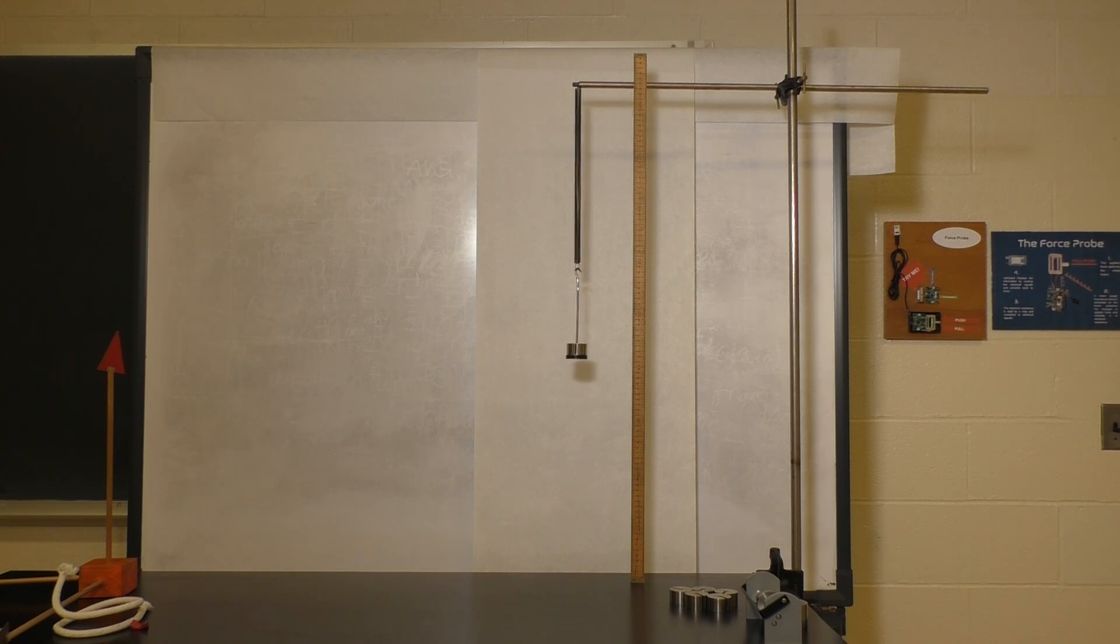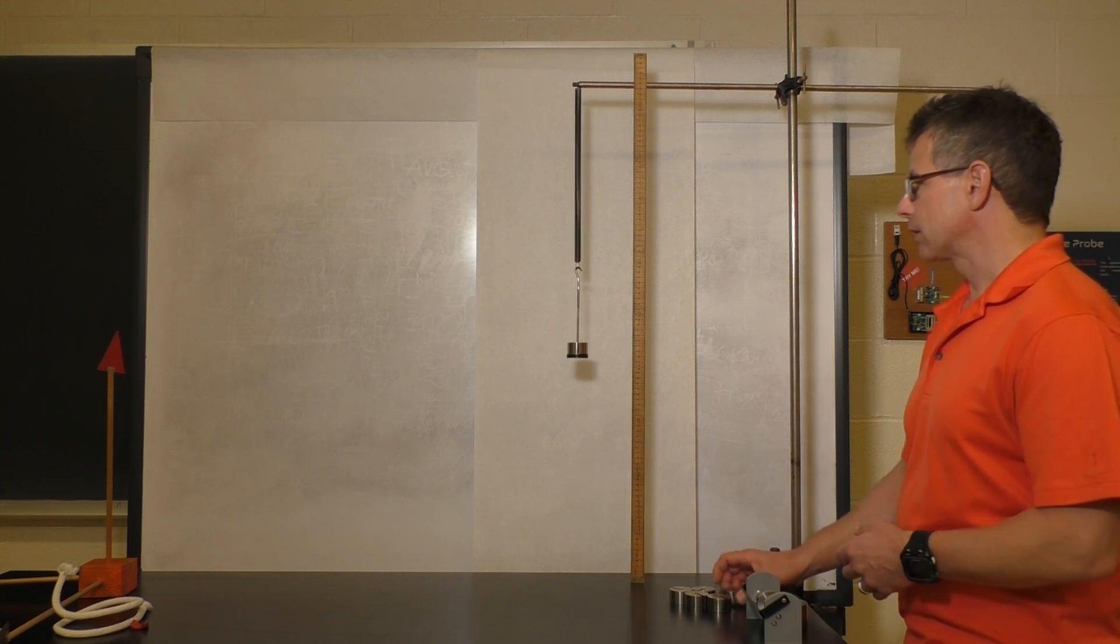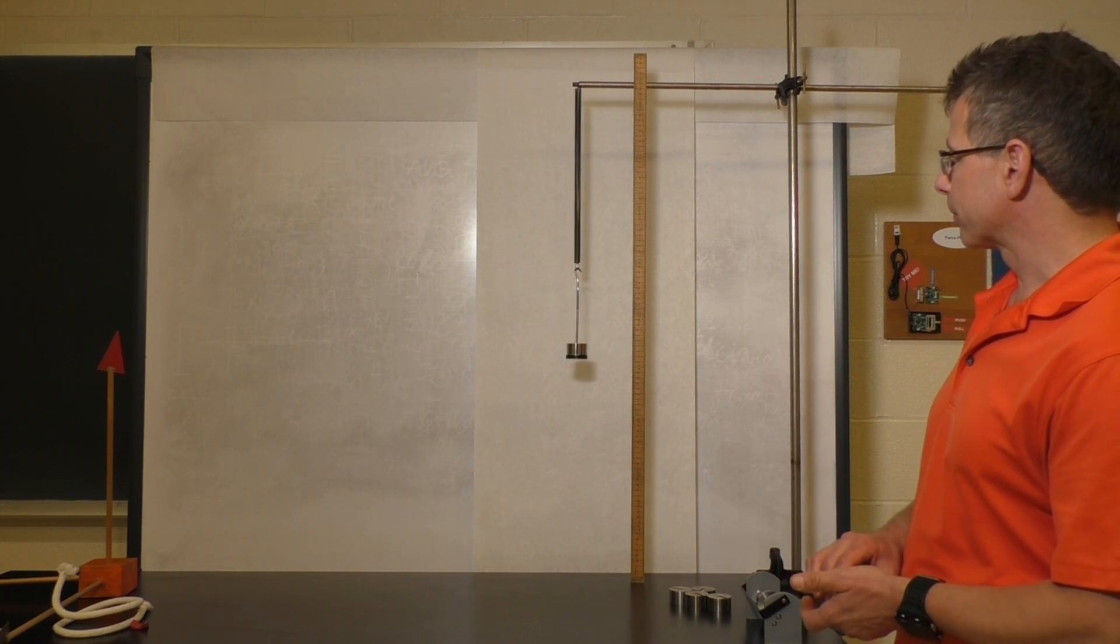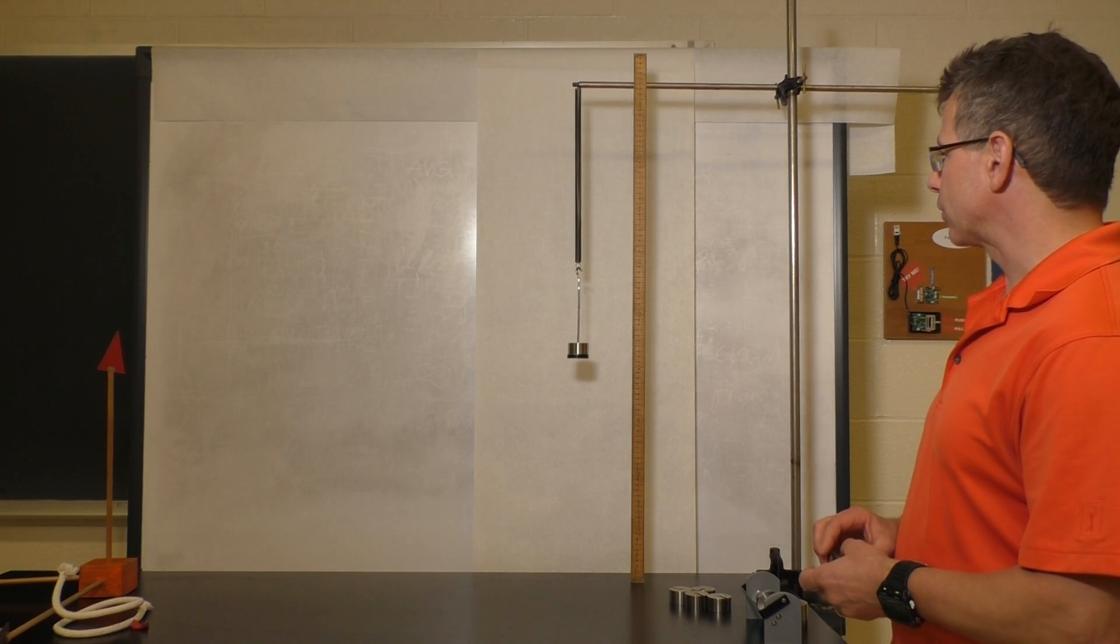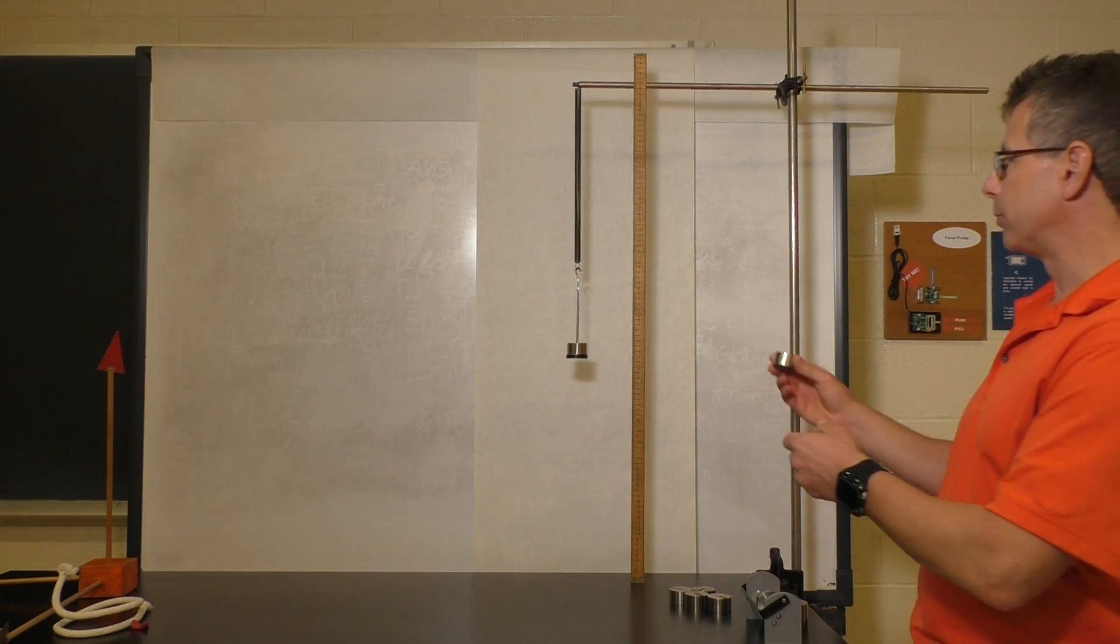What I'll do is I'll sequentially add more 200 gram masses. Right now on the spring, there's a 50 gram mass and a 200 gram mass, so the spring is right now in equilibrium.